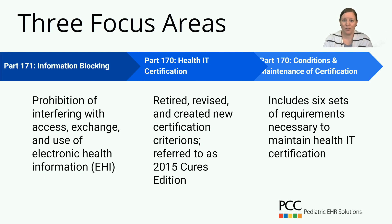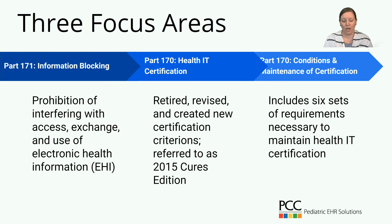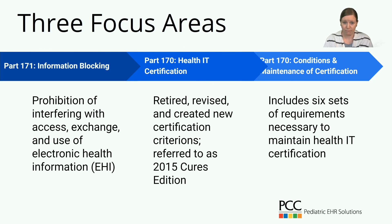There are three focus areas of the rule. Part 171 is the majority of what we've been speaking about today — it is information blocking, the prohibition of interfering with access, exchange, and use of electronic health information. Then there's Part 170, broken into two areas: health IT certification, where some criteria are retired, some are revised, and there are new ones; and the conditions and maintenance of certification, which have been expanded with six requirements. The focus of this presentation is around Part 171 and information blocking in general.